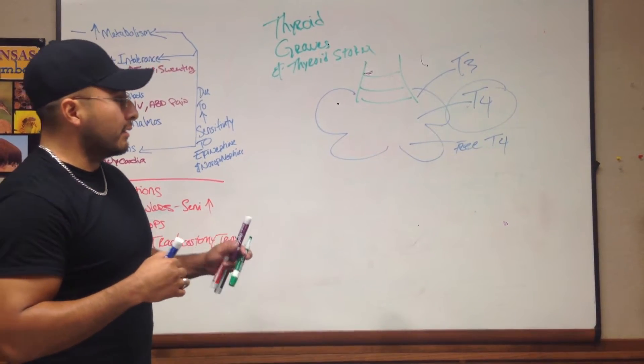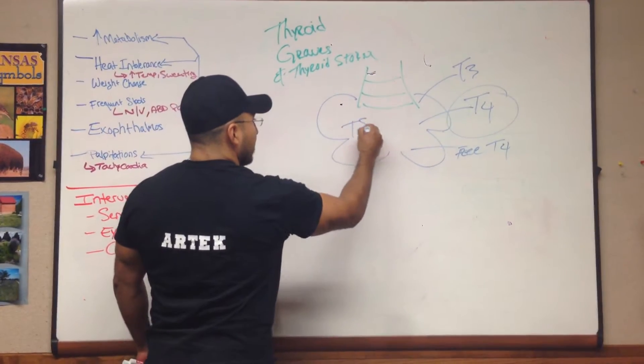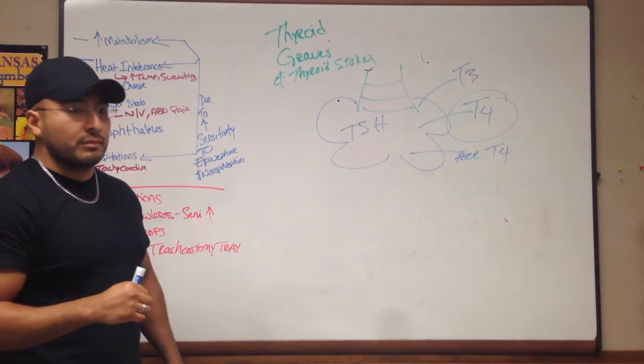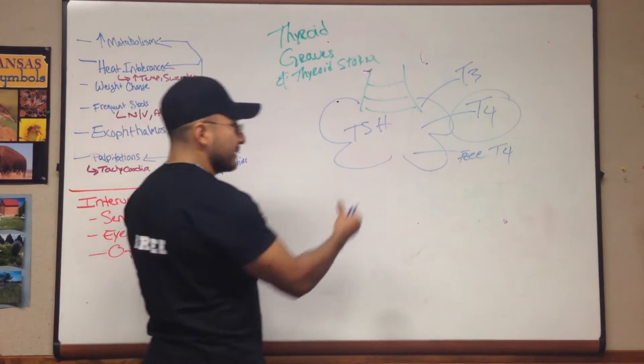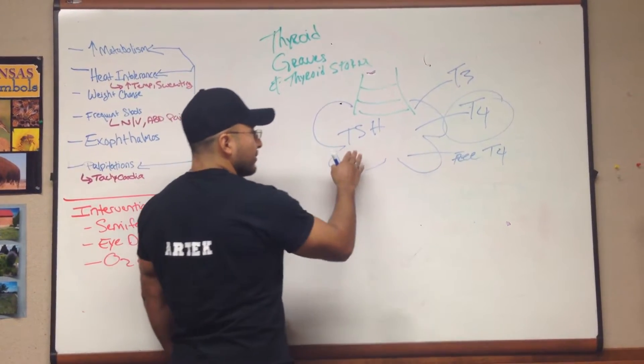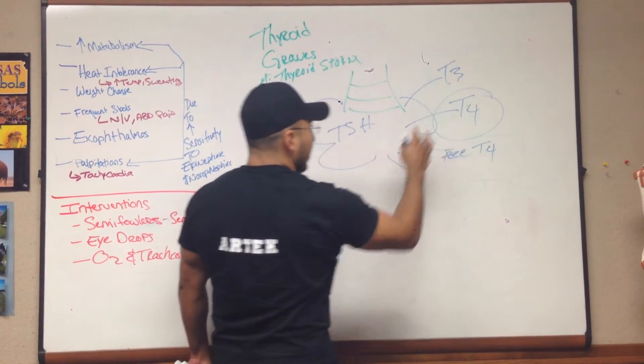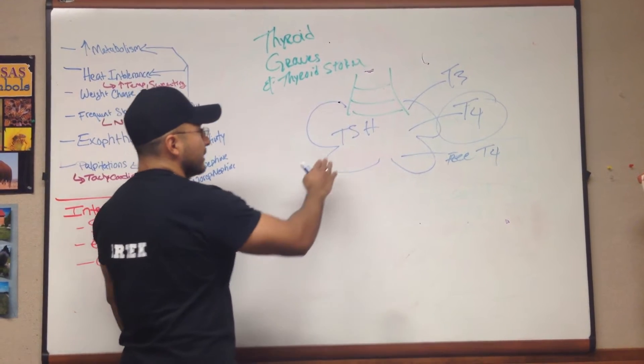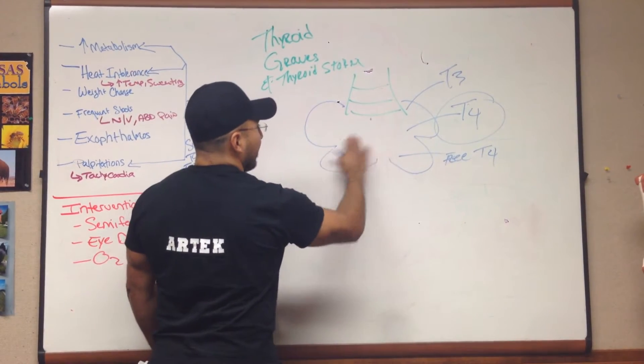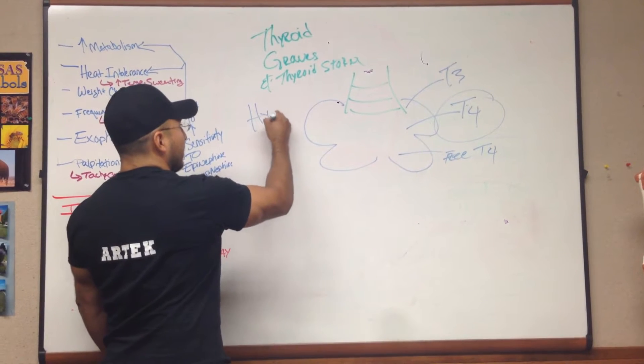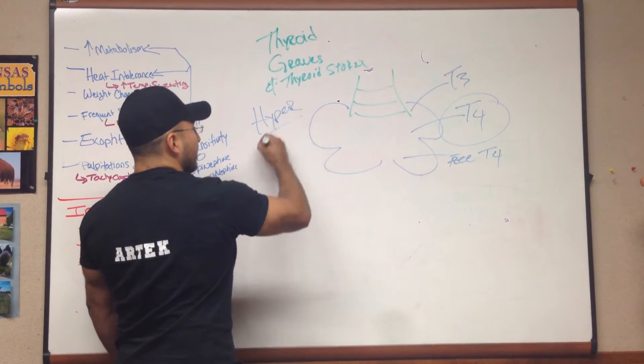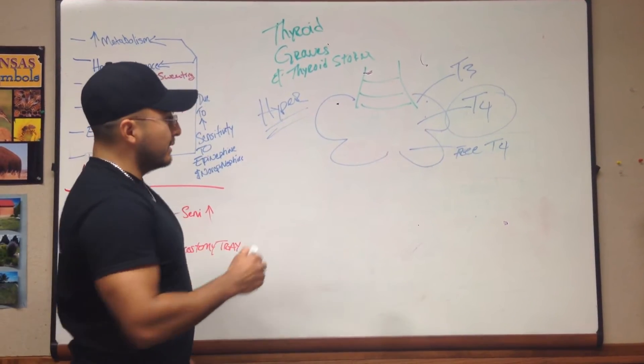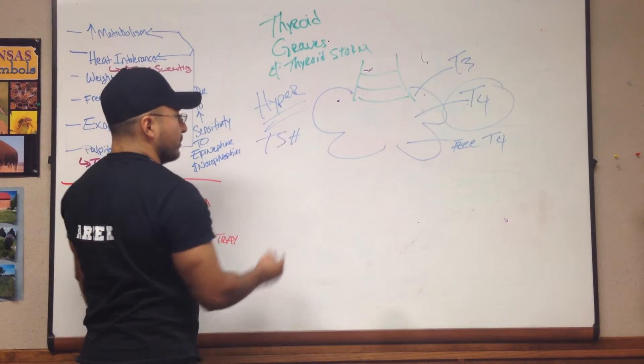Now, there's another thing here that's involved, and that is TSH. TSH stands for thyroid stimulating hormone. Just like the name says, it stimulates your thyroid gland to produce T3 and T4. Now, in Graves disease, or in hyperthyroidism, hyper meaning an overproduction of T3 and T4, in hyperthyroidism, TSH should be decreased.